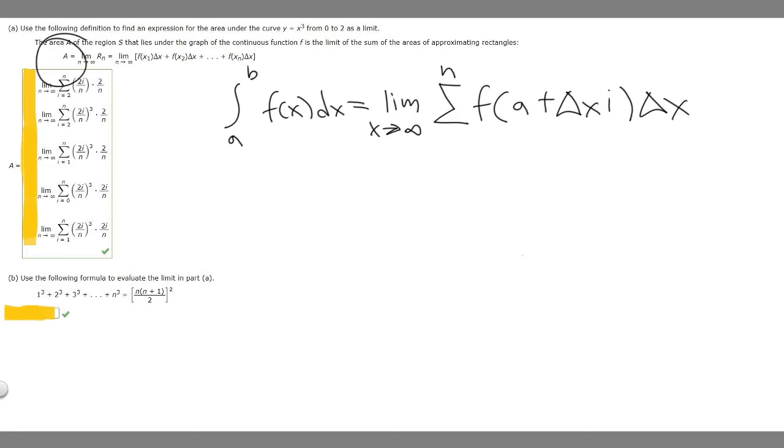We're told that a equals the limit as n approaches infinity and then all this stuff. So what you need to know in order to solve this problem is this formula. The integral from a to b of f(x) dx is equal to the limit as x approaches infinity sigma n of f(a + delta x i) times delta x. So this basically is what we're trying to find.